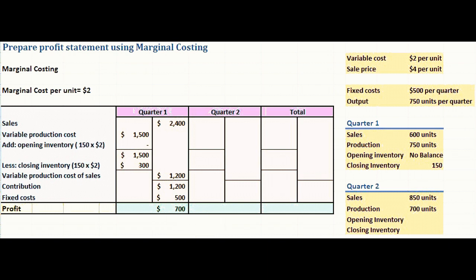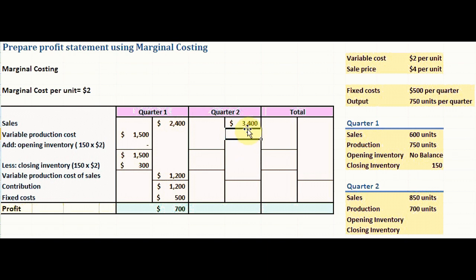For quarter two, sales is 850 units. We multiply 850 by the sale price of $4 per unit. 850 times $4 gives total sales of $3,400 for quarter two.